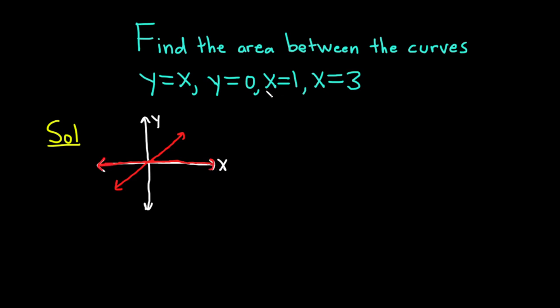And the lines x equals 1 and x equals 3 are vertical lines. Maybe here's 1, and maybe here's 3. So they're vertical lines, and I'm going to stop drawing them when I hit the line y equals x and start drawing them at y equals 0. So you can see this enclosed region here in yellow is the area we're looking for.